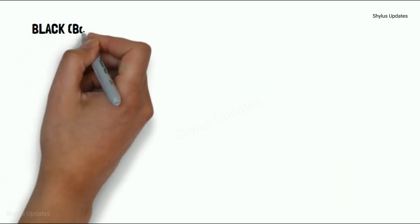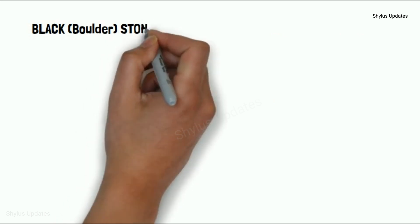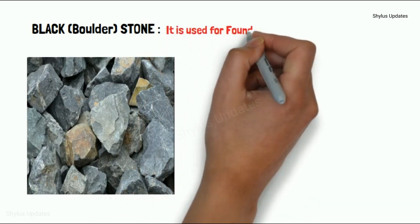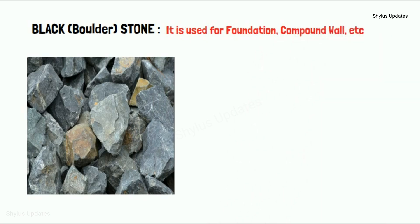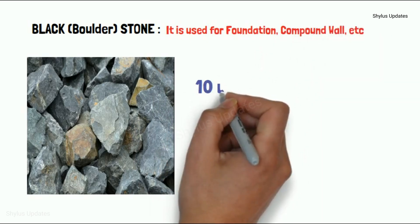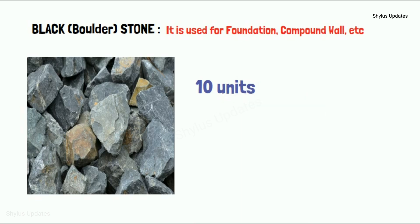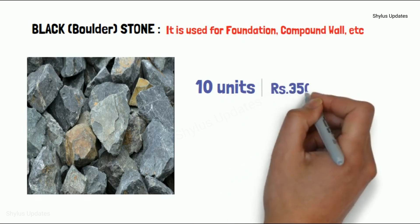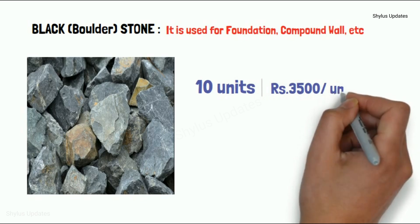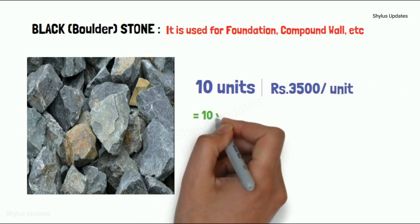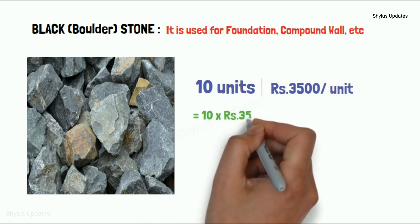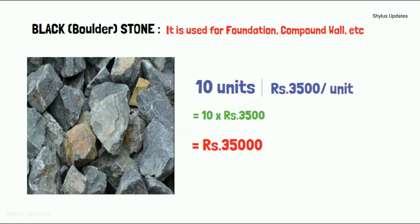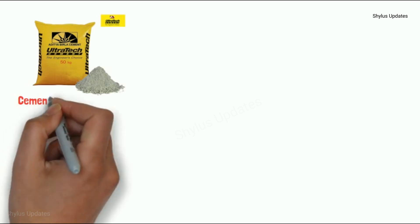Black stone, also called boulder stone, is used for foundation common wall. For an 850 sq ft house, 10 units of black stone is required. The current market rate of black stone is Rs. 3,500 per unit. When you multiply 10 into Rs. 3,500, you get Rs. 35,000.